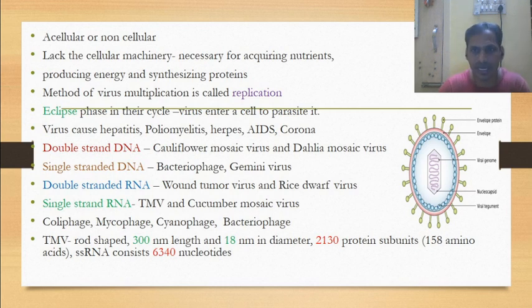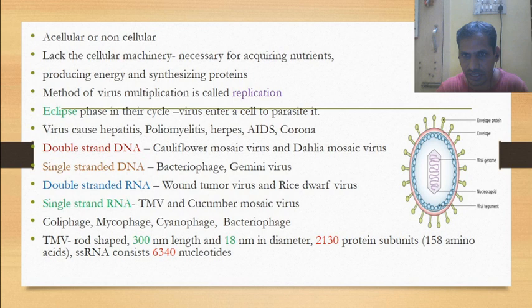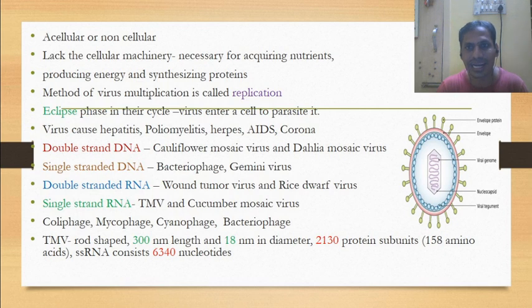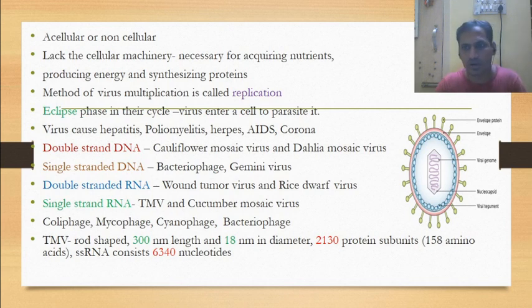The method of virus multiplication is called replication. One important phase in replication is called the eclipse phase or latent phase. In the latent phase, the virus enters a cell to parasitize it — this is called the latent phase or eclipse phase.